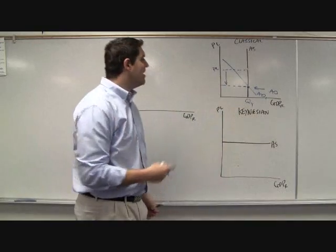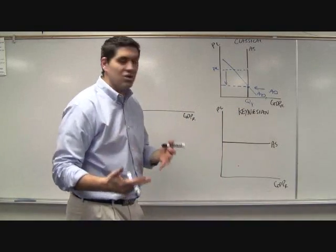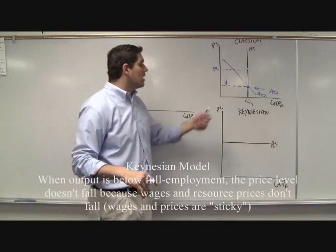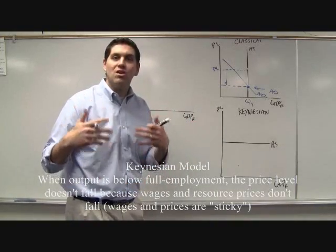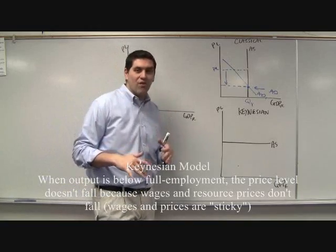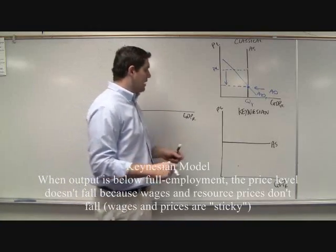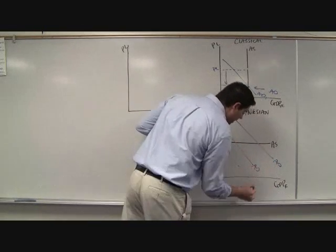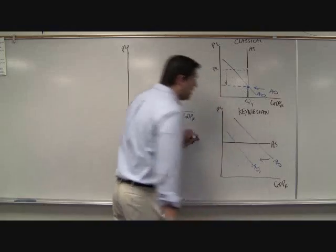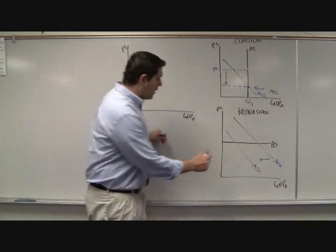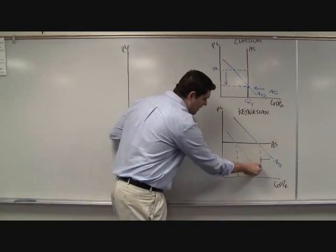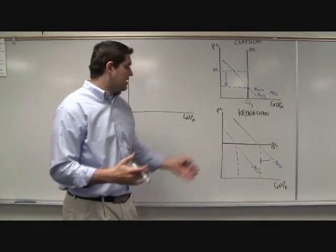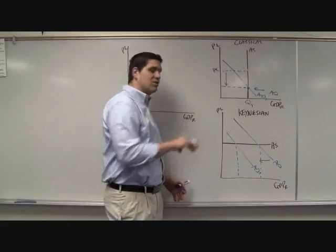Keynes said no, that's not how it works, and the Great Depression showed us it's not how it works. Prices did not automatically fall, Keynes said, because they are sticky. Wages are sticky, prices are sticky, they don't really fall very much. So he said, when aggregate demand shifts to the left, prices don't fall — all we get is a decrease in output and now we're stuck with that. Something has to step in to fix the problem. That's the idea of the Keynesian aggregate supply curve.